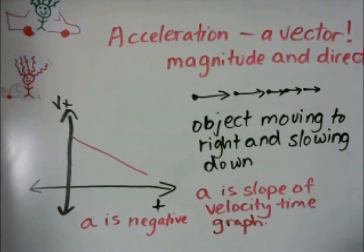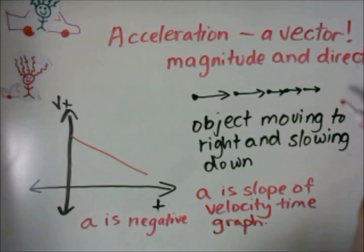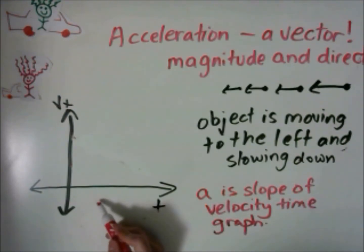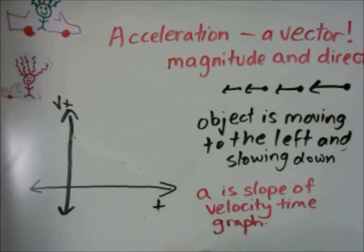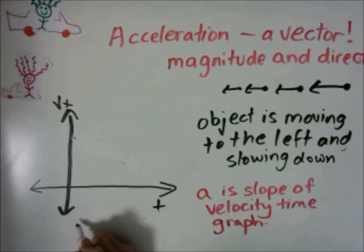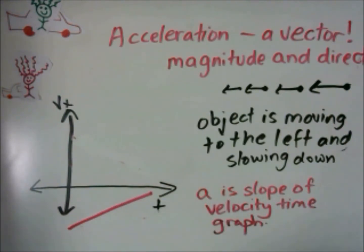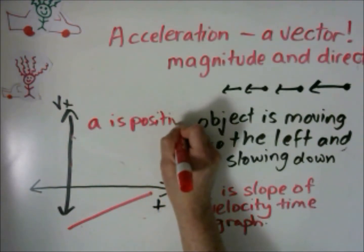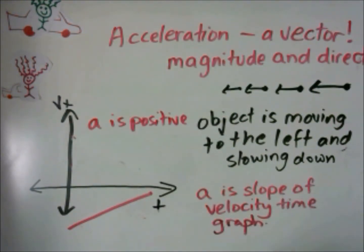So to determine whether acceleration is positive or negative, an easy way is to plot it on a velocity-time graph. It may be intuitive that an object that is slowing down has negative acceleration, but that's not always true — it is true when it's moving to the right. Now we have an object moving to the left and slowing down. If it's moving to the left, its velocity is negative, so it needs to be below the x-axis. But it's slowing down, meaning its velocity is moving closer to zero. This is an example of acceleration that's positive even though the object is slowing down.